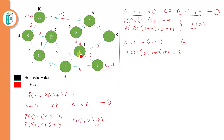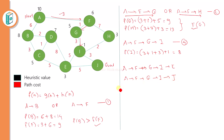From I, there are three paths available: I to E, I to J, and I to H. We need to calculate F values for all three to find which leads to the goal. We will find out the goal by calculating F(E), F(J), and F(H) for these three paths.